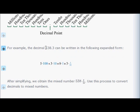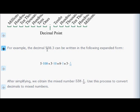Let's say we have the decimal 538.3 — a number a little bigger than 538 but smaller than 539. You have five in the hundreds spot (five times a hundred), three in the tens spot (three times ten, which is thirty), eight in the ones spot (eight times one), and three in the tenths spot (three times one-tenth). After simplifying, we get the mixed number 538 and three-tenths. This is how we convert a decimal to a mixed number.